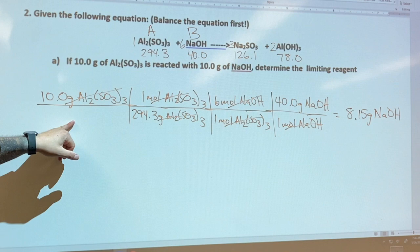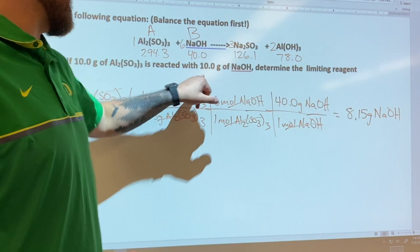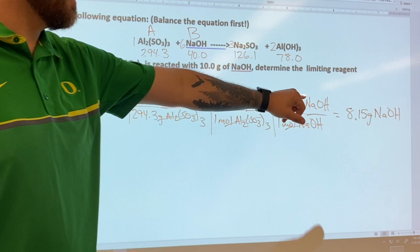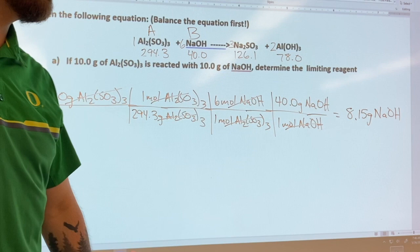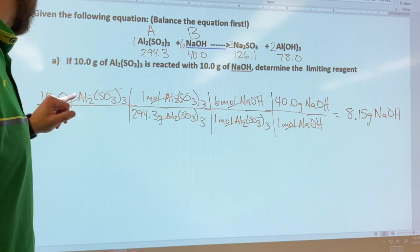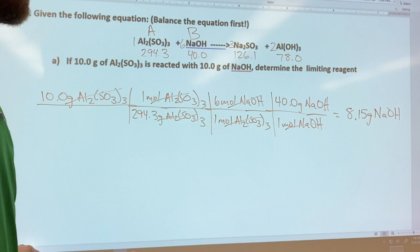I'm going to run out of this. So this tells me that Al₂(SO₄)₃ is limiting, because when this is all gone, I will still have some of this left over. When all 10 grams of this is gone, I'm going to use up 8.15 grams of NaOH, but I have 10 grams, so I'll still have like, you know, 1.85 grams left over. So I am not going to run out of NaOH. I'm going to run out of this.